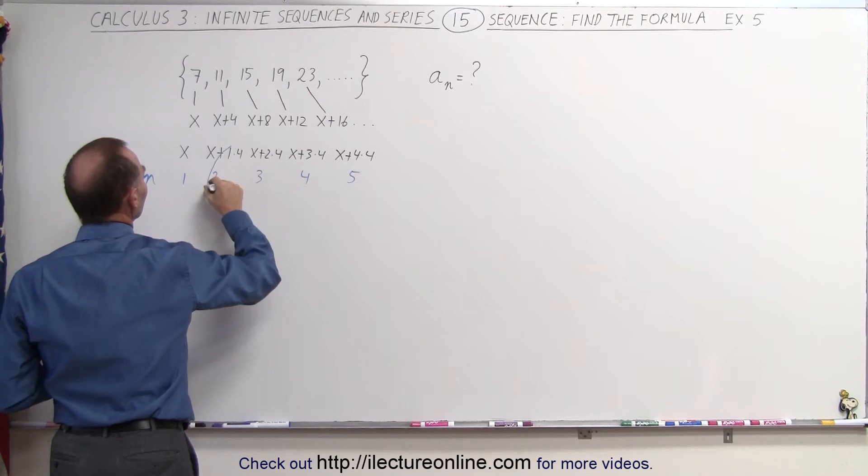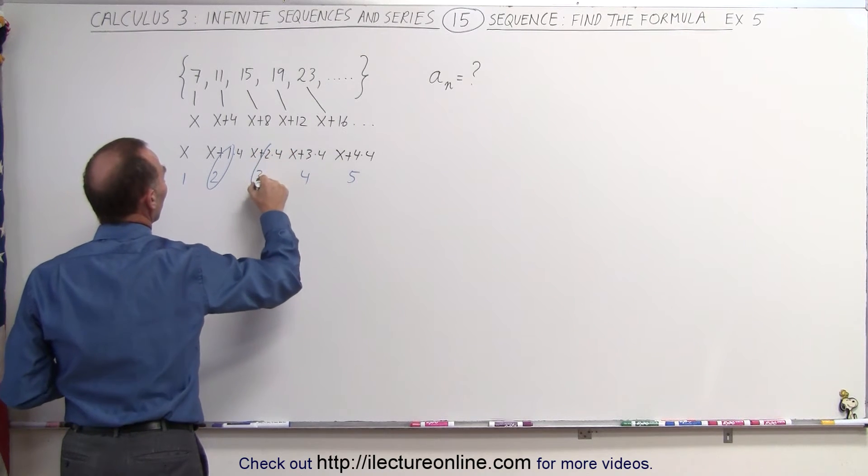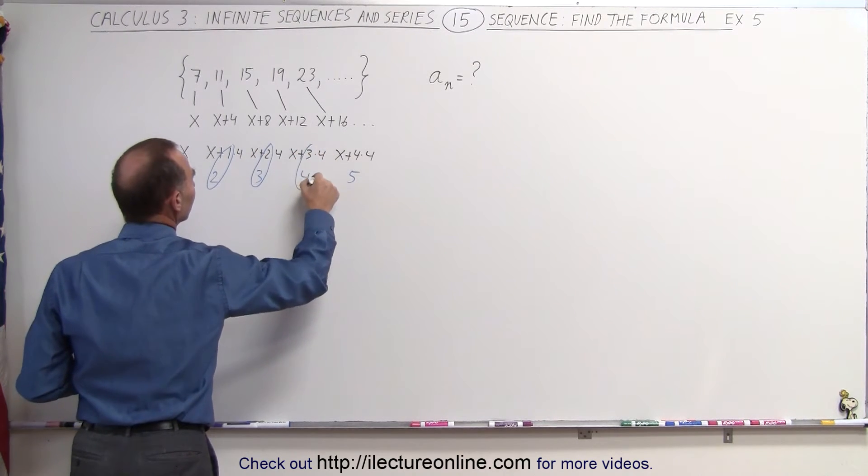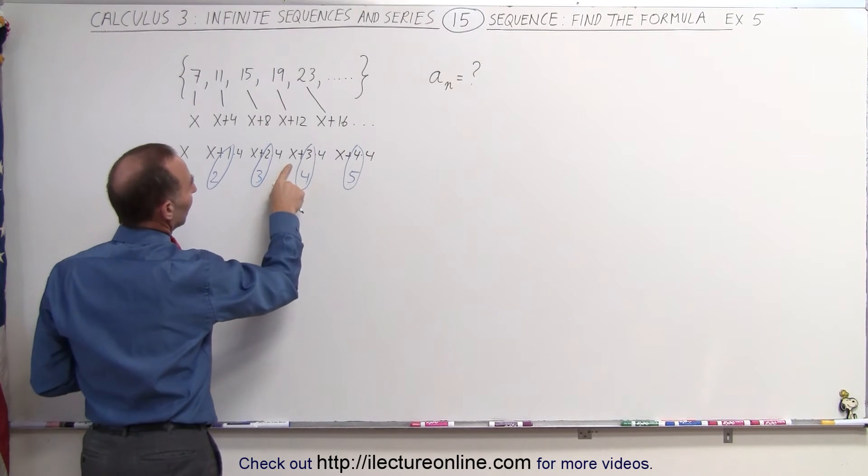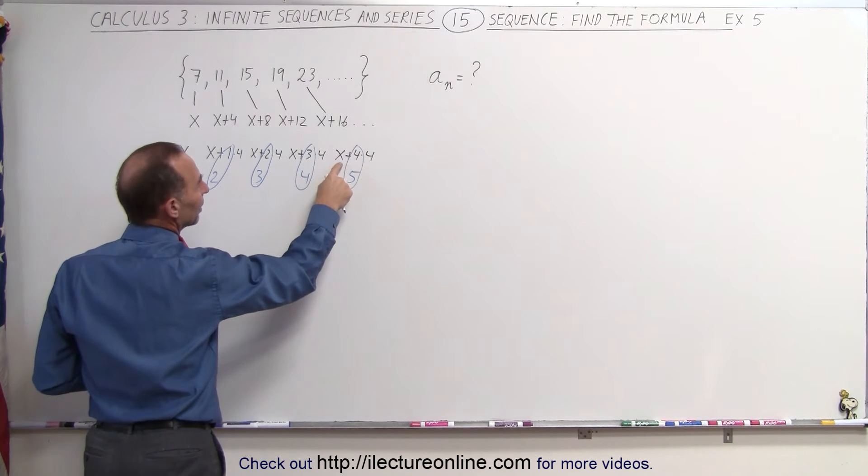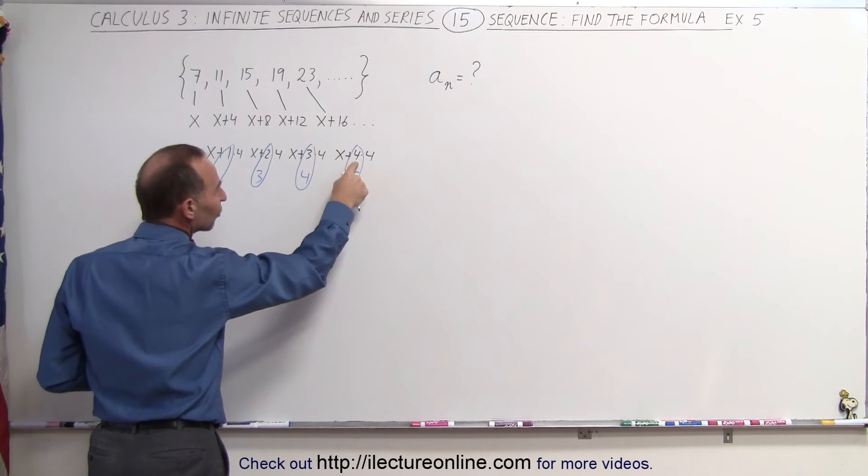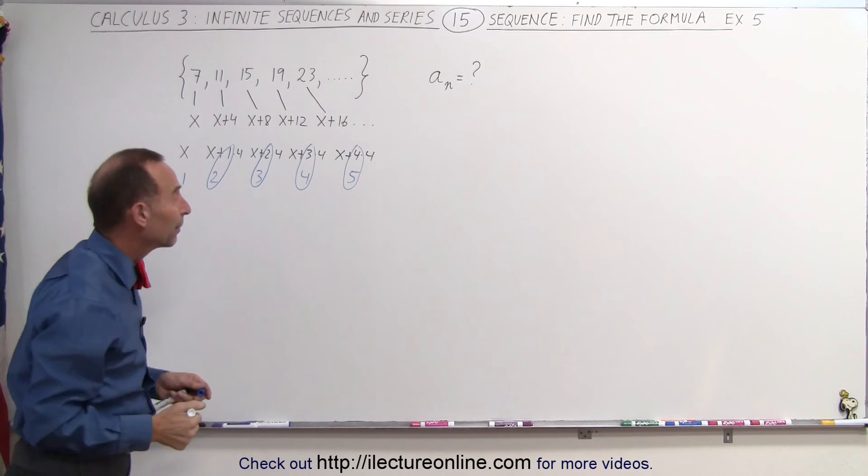And notice that in each case n is offset by 1 relative to the number that I need. So you can see that this would, for example, be x plus n minus 1 times 4. Here x plus n minus 1 times 4, so we're beginning to see the pattern here.